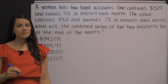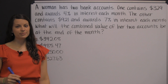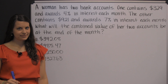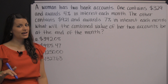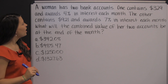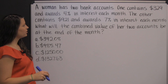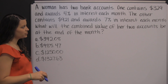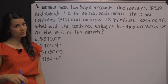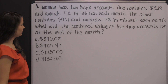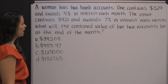You have to be prepared for a lot of word problems on the arithmetic reasoning section of the ASVAB. Here's one example of something that you might see when you take the ASVAB. A woman has two bank accounts. One contains $329 and awards 4% in interest each month. The other contains $921 and awards 7% in interest each month. What will the combined value of her two accounts be at the end of the month?